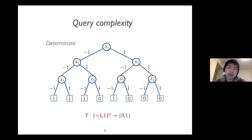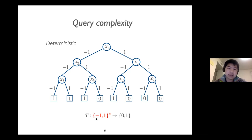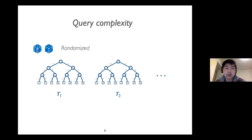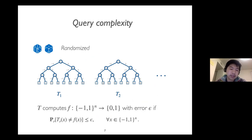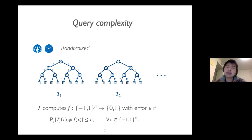Throughout this talk, we are going to focus on Boolean functions, and we are going to use the minus 1, 1 representation to encode the input bit. A randomized decision tree is simply a distribution on decision trees. We say that the randomized decision tree computes a function f with error epsilon if the probability that the tree outputs a wrong value is at most epsilon for any input.